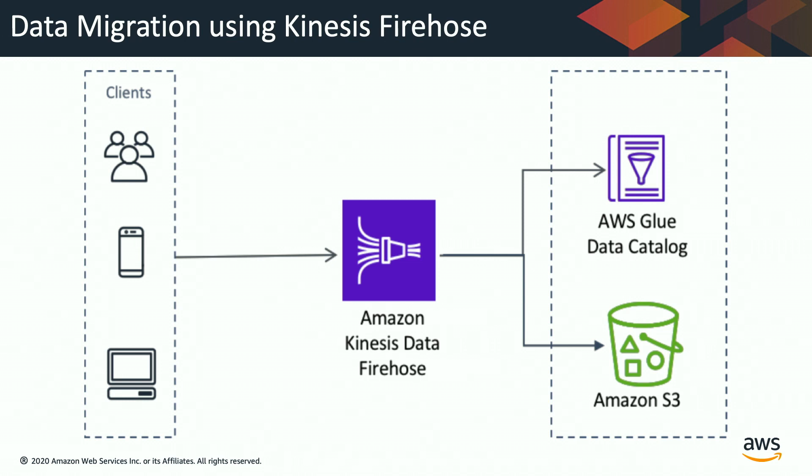Here's an example: multiple clients feed data in a streaming fashion to Amazon Kinesis Data Firehose, which continuously pushes that data to Amazon S3. AWS Glue Data Catalog catalogs the data. For example, if you're getting streaming data and want to create new daily partitions, Kinesis Data Firehose can create new partitions in Amazon S3, and Glue Data Catalog updates those partitions so that Apache Hive queries on Amazon EMR can leverage them.